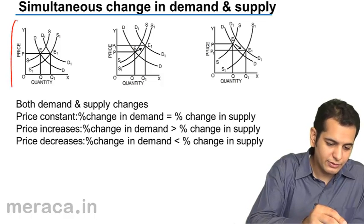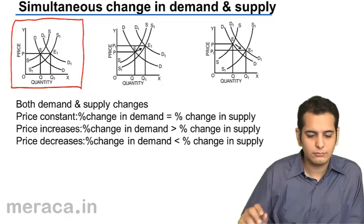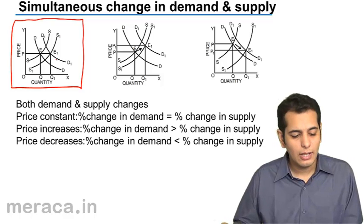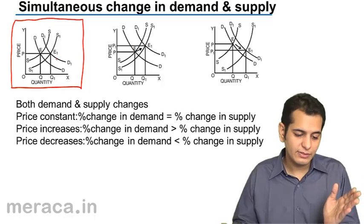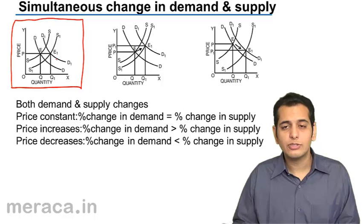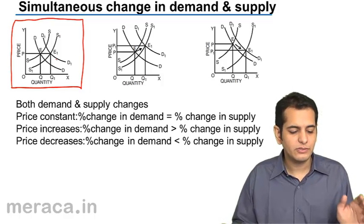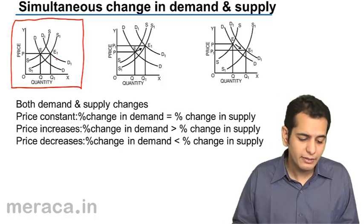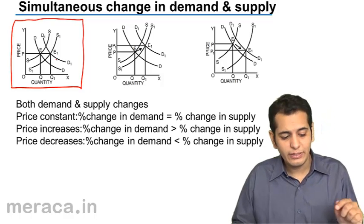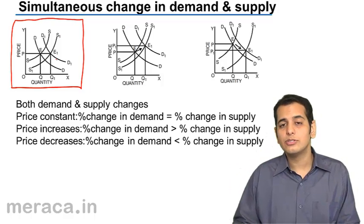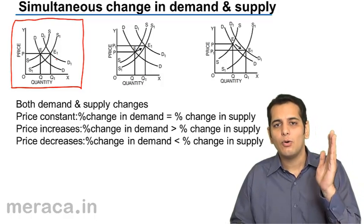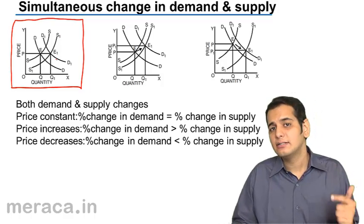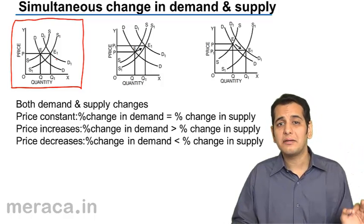Let's consider the first case. Here, DD is the original demand curve and D1D1 is the new demand curve. We can see that D1D1 is above the original DD demand curve, which means demand has increased. We also have curve SS, the original supply curve, and S1S1 on the right-hand side of SS, which means supply has also increased. So in this case, both demand and supply are simultaneously increasing.